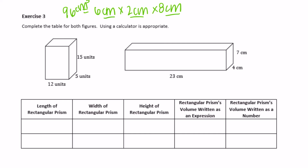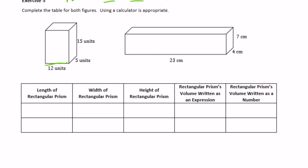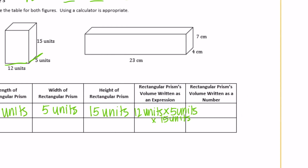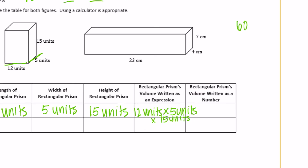Complete the table for both figures; using a calculator is appropriate. The first prism: length is 12 units, width is 5 units, height is 15 units. Volume as an expression: 12 units times 5 units times 15 units. As a number: 12 times 5 is 60, and 60 times 15 is 900 units cubed.